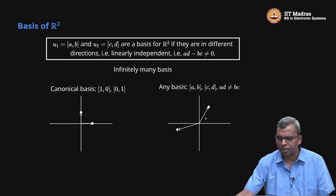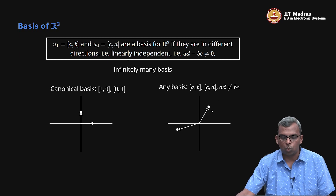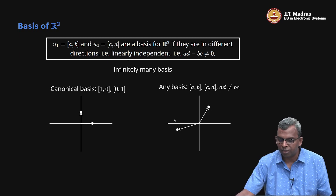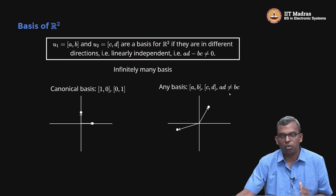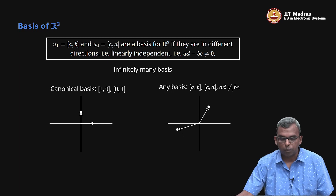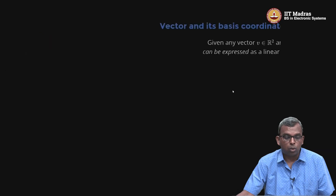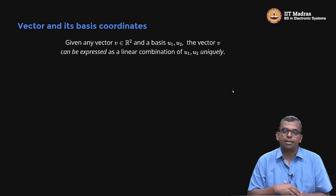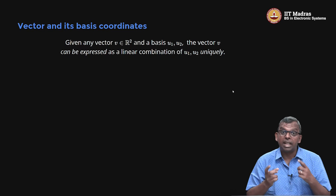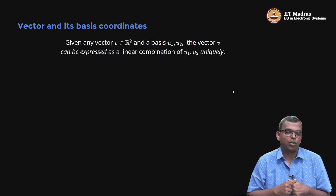There are infinitely many bases — this is not the only one. Any A, B, C, D with A*D minus B*C not equal to zero is also a basis. Here the angle is not quite 90 degrees but it is still okay — this is also a valid basis. Now, how are a vector and its basis coordinates related? How do you define the basis coordinates for a vector?